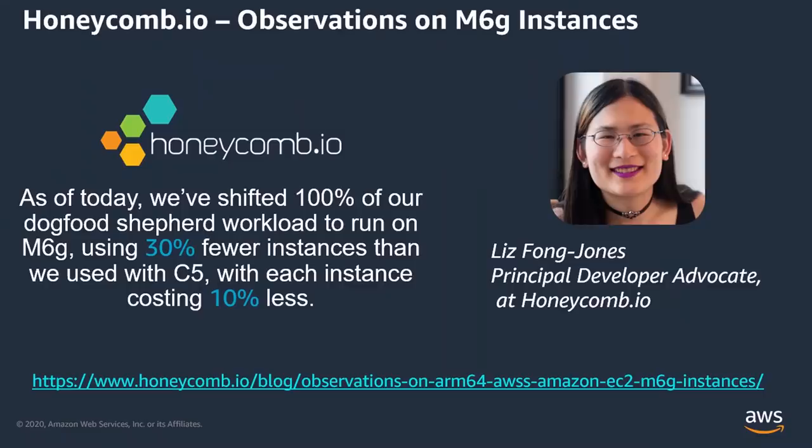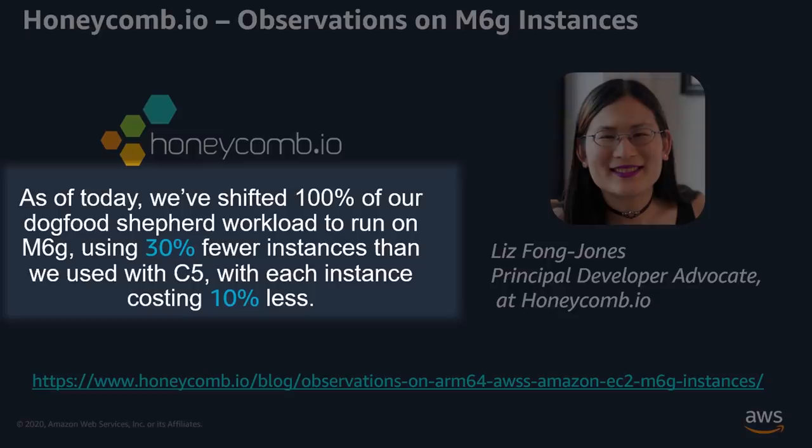We've also got hundreds of customers participating during the design preview validating the price performance benefits versus comparable instance types. HoneycombIO is a great example — they ran their Golang-based application on M6G and compared it to the C5 instances they currently use.